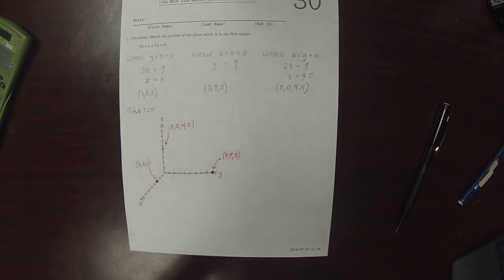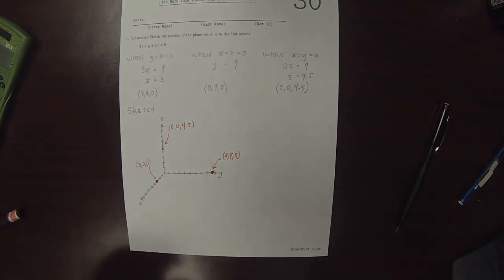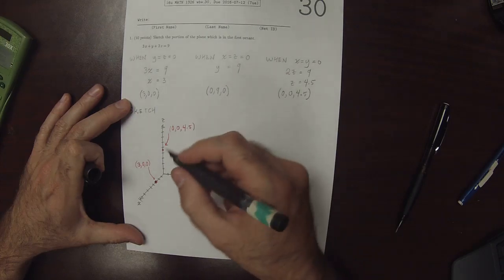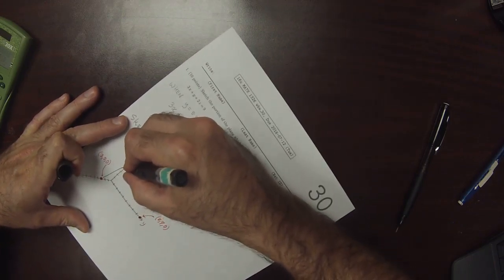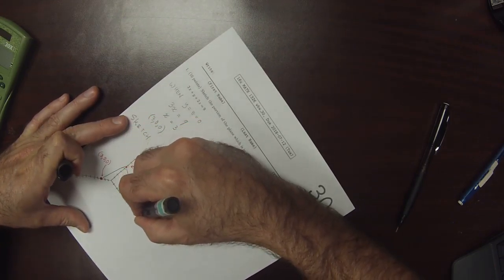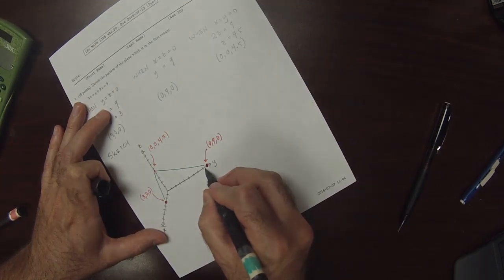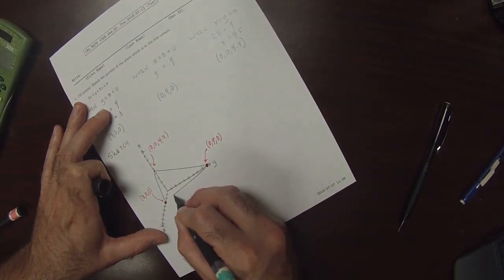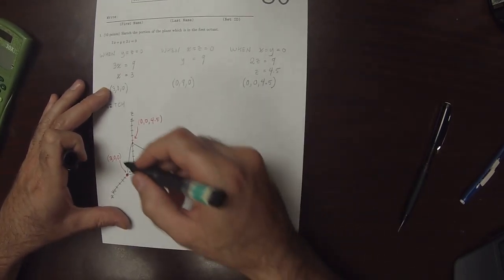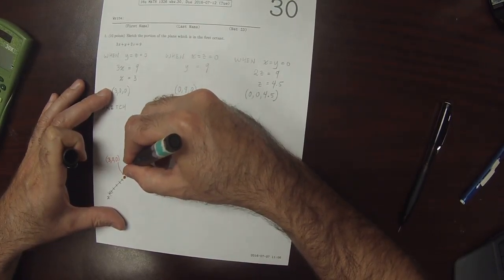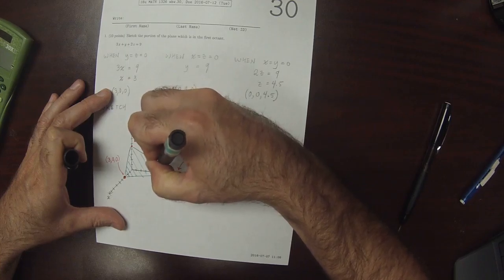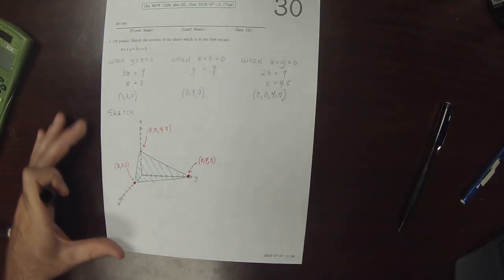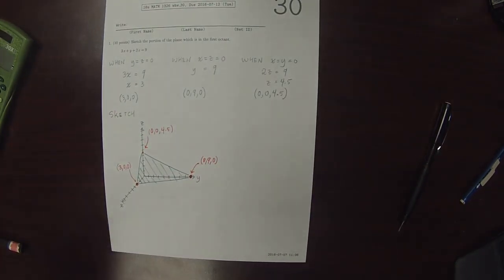Those points are on the plane, and the exercise says just that part of the plane in the first octant. So we'll see just this little sliver of the plane. This part of the plane is in front of the origin, and that's the answer to the exercise.